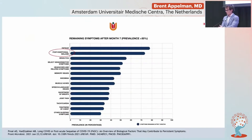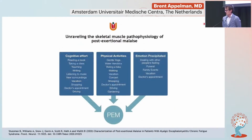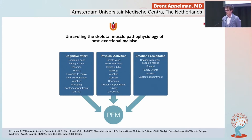Post-exertional malaise is a very frequent symptom — around 70% of all Long COVID patients have it — and it's a really serious symptom. It can set a rehabilitation process back three or four weeks, sometimes even permanently. It's not only physical; it's also cognitive and emotional. Reading a book, socializing with friends, driving, going to a doctor's appointment — all these things can induce post-exertional malaise.